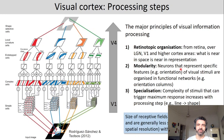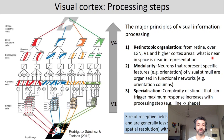The major principles of visual processing are: first, retinotopic organization — from the retina, over LGN, V1, and higher cortex areas, it is always true that what is near in space in the visual field is also near in its neural representation. The second principle is modularity — neurons that represent specific features, for example orientation of visual stimuli, are organized in functional networks, for example orientation columns.